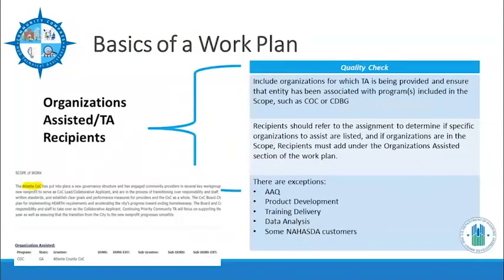Organization assisted should always be included on your work plan when you have that information. If an organization is identified in your scope or the TA recipients are listed in the portal under assignment, you should populate this field in DRGR. For product development and training work plans in the portal, TA recipients assisted is not required. AAQ work plans do not require organizations assisted to be provided. Also note that the organization assisted may not be an option to select in DRGR because all possible entities have not been added to the dropdown options.